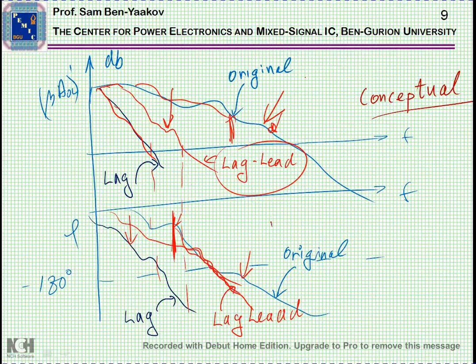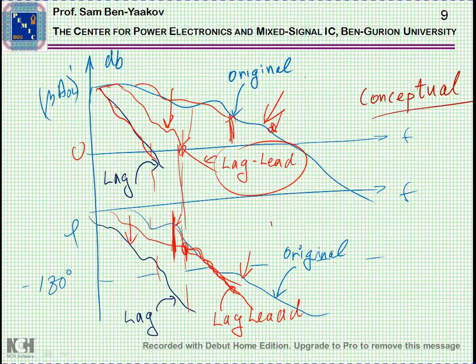So by that, you can attenuate the signal. And here, when it passes the 0 dB, you don't get the positive feedback. You get a nice phase margin here, which keeps you safe.